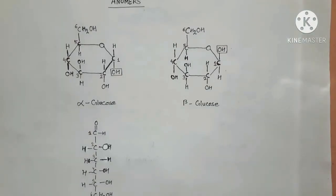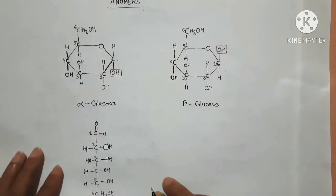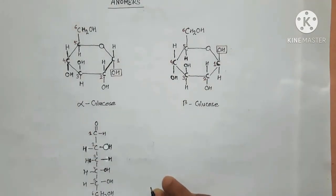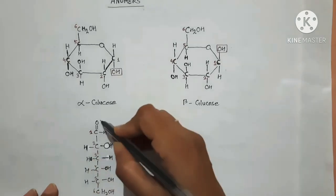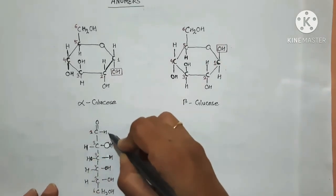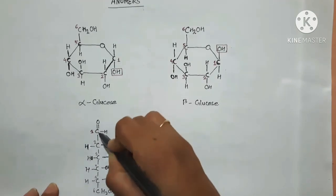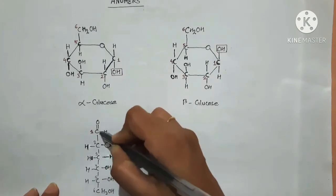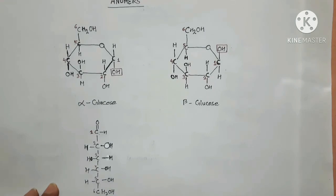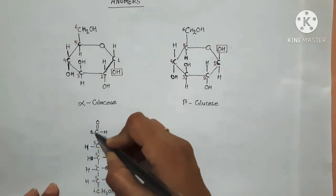Next are anomers. Anomers are the cyclic monosaccharides which differ in structure only at the anomeric carbon. The anomeric carbon is the carbon present in the functional group of carbohydrates. In glucose, the functional group is the aldehyde group, and the carbon involved in that functional group — the lowest-numbered carbon — is the anomeric carbon.